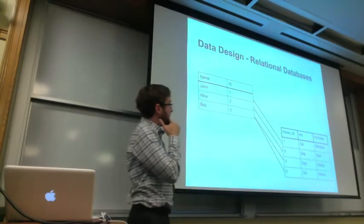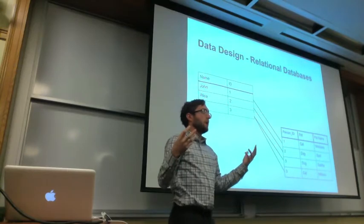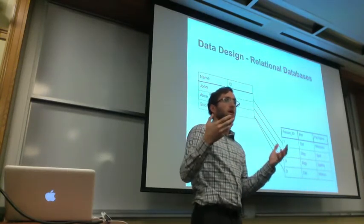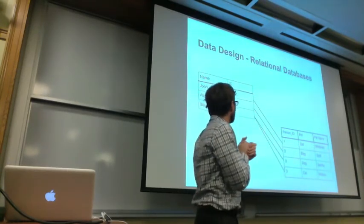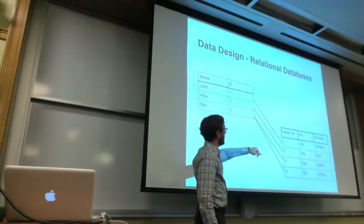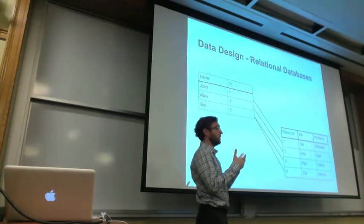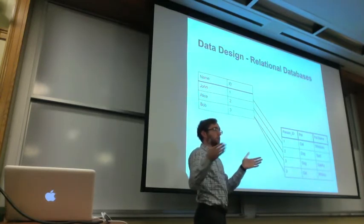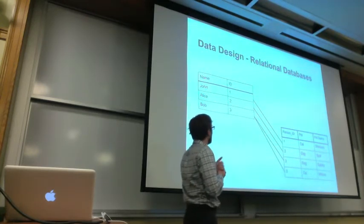So what relational databases do is they break apart these tables and make unique identifiers to link these things. So here in this relational database, instead of having it as one table that's stacked either in the cell horizontally or vertically, we now have two tables.